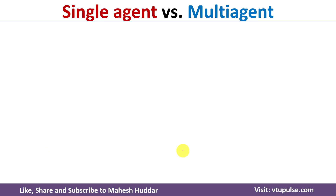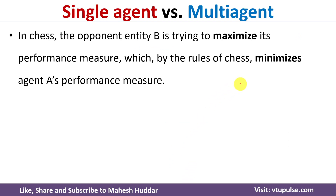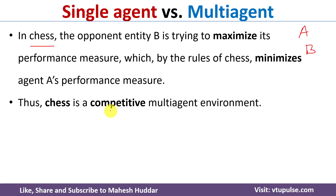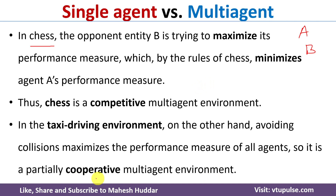In a multi-agent environment there are two possibilities: competitive multi-agent and cooperative multi-agent. In chess, two agents — A and B — are both trying to maximize their own performance by minimizing the other agent's performance. They are competing with each other, so this is called a competitive multi-agent environment.